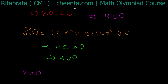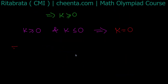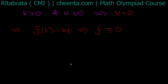So k ≥ 0 and k ≤ 0 both hold simultaneously, which together imply k = 0. Therefore f is identically equal to zero — f is the zero polynomial.